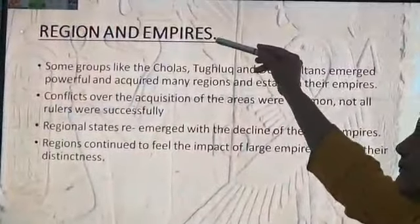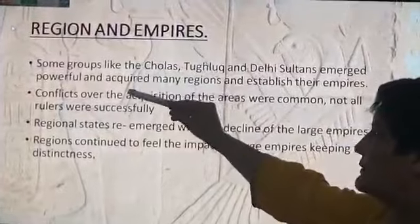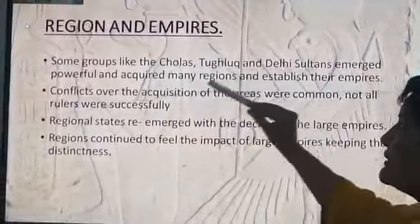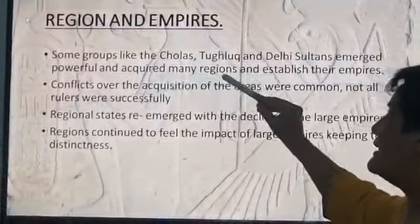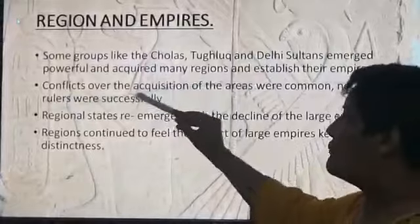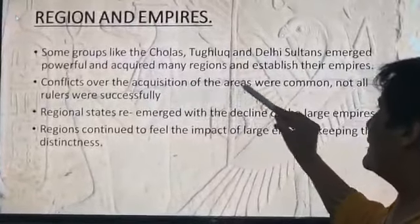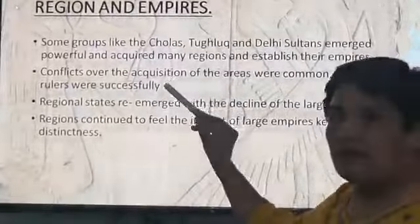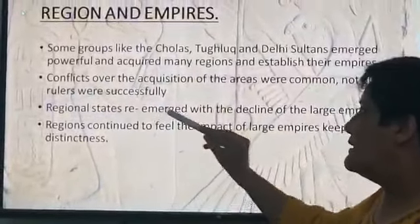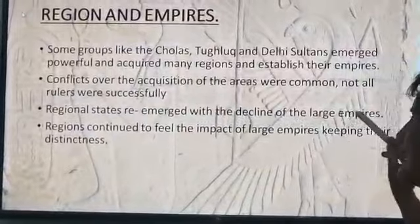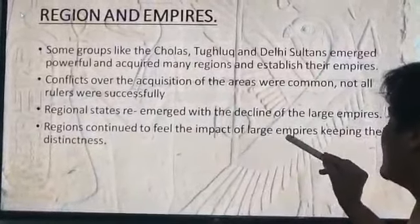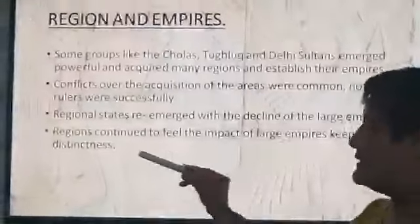New regions and empires: some groups like the Cholas, Tughlaqs and Delhi Sultans emerged powerful and acquired many regions and established their empires. Conflicts over the acquisition of areas were common, and not all the rulers were successful. The regional states recommenced with the decline of the large empires. Religions continued to feel the impact of large empires while keeping their distinctness.